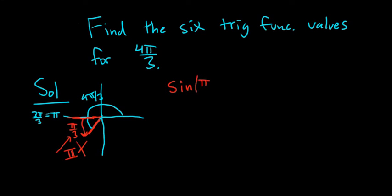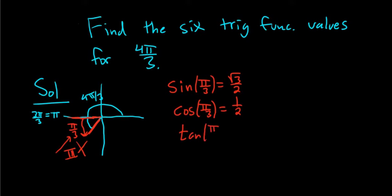The sine of π over 3 is √3 over 2. The cosine of π over 3 is 1/2. To find the tangent of π over 3, you divide sine by cosine: that's (√3 over 2) divided by (1/2), which equals √3 over 2 times 2 over 1, giving you √3.